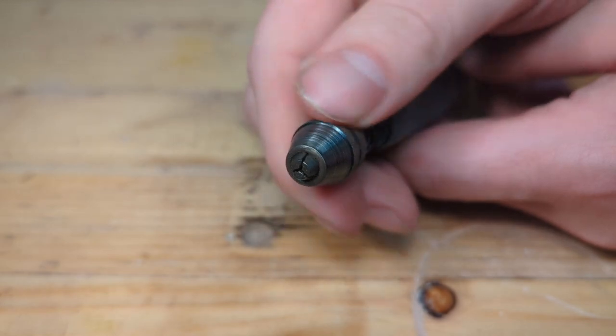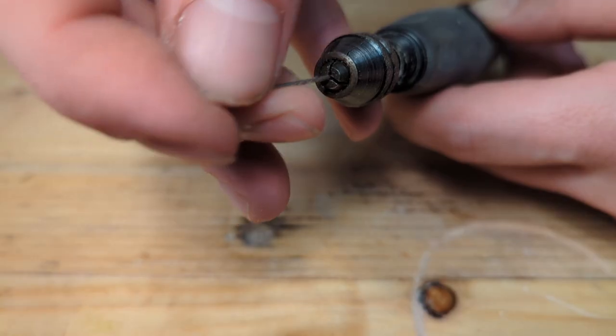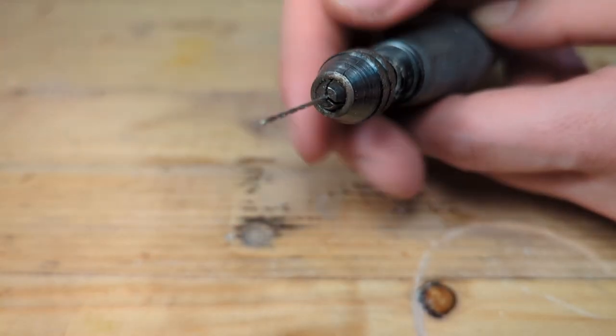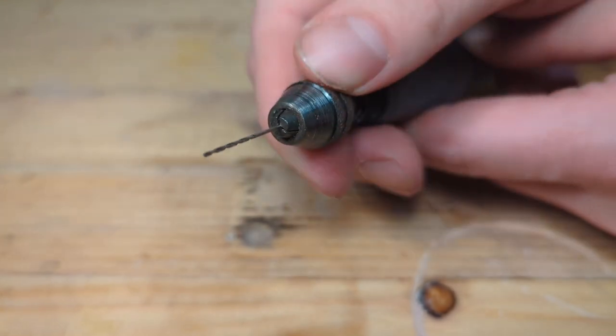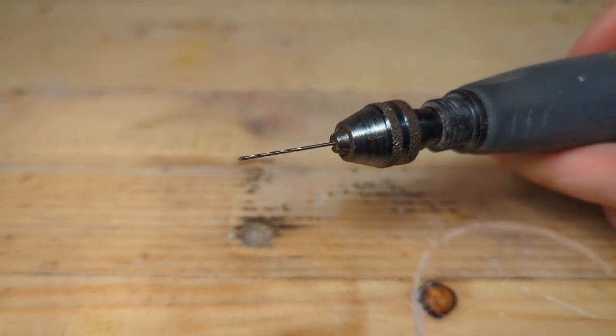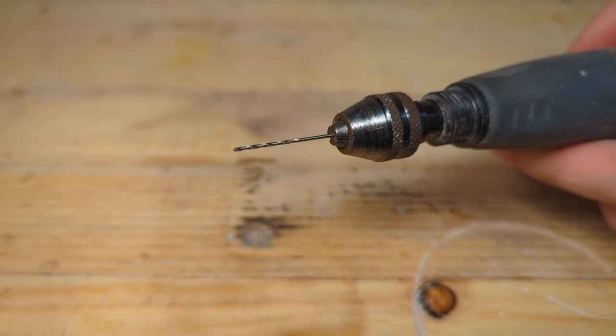And if you don't want to deal with collets, because they can be quite annoying to keep track of, you can get the 4486 keyless chuck. And this works exactly like the chuck that a cordless drill uses and it is really handy.